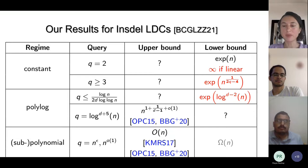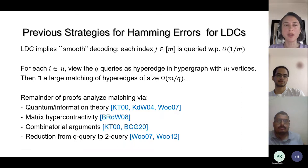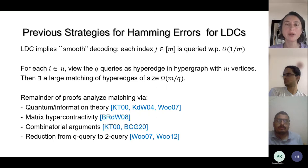The interesting result is exponential lower bounds for INSDEL in regimes where we don't have the same for Hamming. To motivate the proof, let me say a few words about how lower bounds for Hamming LDCs are proved. The notion of smooth decoding is key: a decoder that queries any index j with probability at most O(1/M). Every LDC can be transformed into a smooth one. Viewing queries as hyperedges in a hypergraph with M vertices, one can find a large matching of size M/Q, and from here derive lower bounds using quantum information and hypercontractivity arguments.